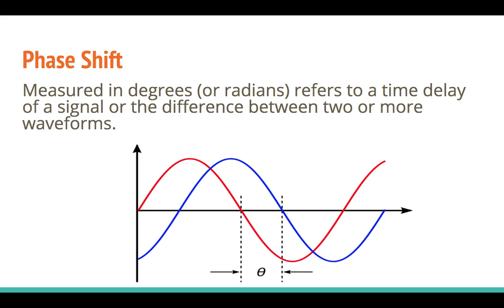The radian represents everything in multiples of pi. So one full rotation would be two pi radians. Phase shift is measured in degrees or radians, and refers to the time delay of a signal or the difference between two or more like waveforms.